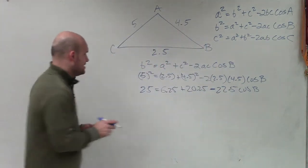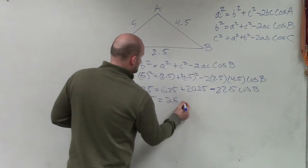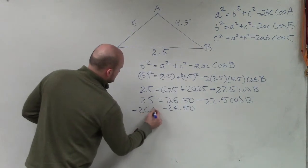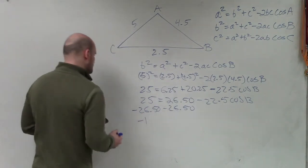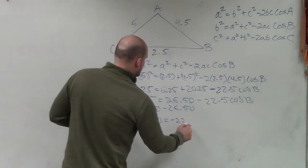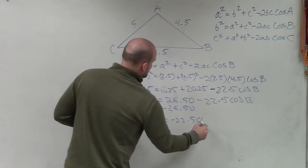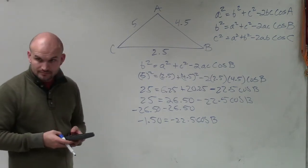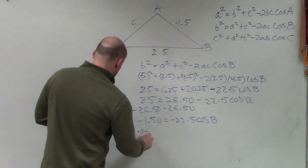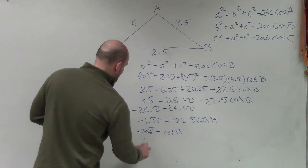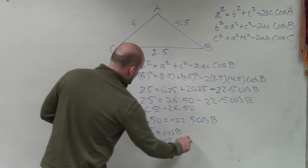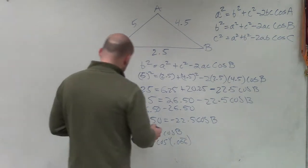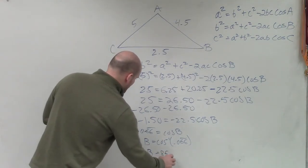So now, we can add these up. I have 25 = 26.50 - 22.5 times the cosine of b. Subtract 26.50 on both sides, so now you have -1.50 = -22.50 times the cosine of b. Now I take -1.50 divided by -22.5, and I get 0.066 repeating equals the cosine of b. To find b, I need to take the inverse cosine of 0.066 repeating. So I take inverse cosine of second answer, and I get 86.17, and I'll round that to 86.18. So b = 86.18.